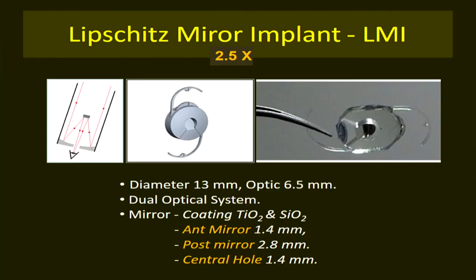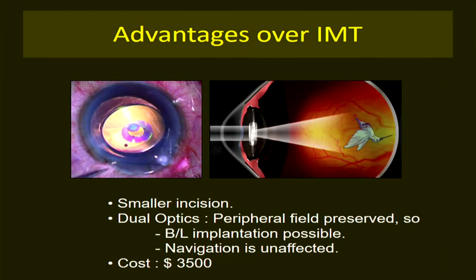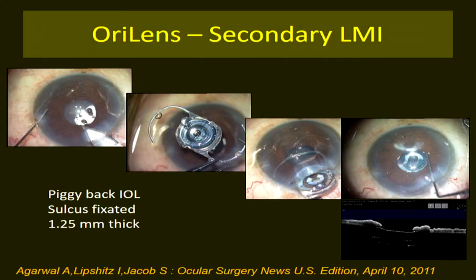The Lipschitz mirror implant gives 2.5x magnification. It is smaller and more easily implantable than the IMT. It works on the Cassegrain dual-mirror system with a central hole of 1.4 mm, and a plano optic peripheral zone used for peripheral viewing. Advantages over the IMT include smaller incision size and the ability to implant bilaterally without loss of peripheral vision. A secondary version is the ORI lens.